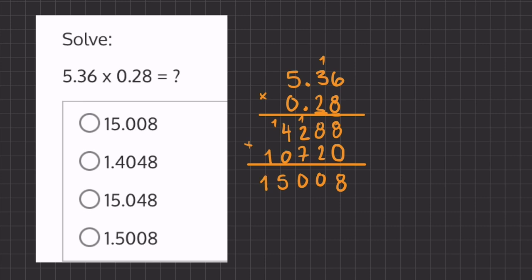So now how do we know where to place our decimal? We're going to count up the numbers that we have after the decimal in both of our numbers and move our decimal place accordingly. So we have 1, 2, 3, 4 numbers after the decimal. So we're going to move 1, 2, 3, 4 numbers to the left. So our final answer is going to be 1.5008.